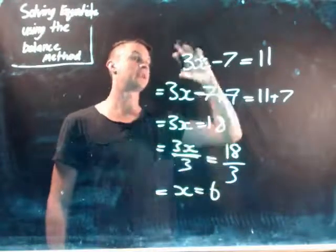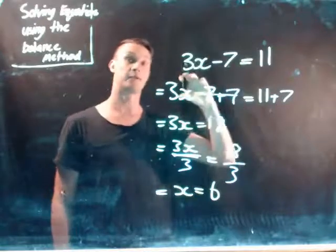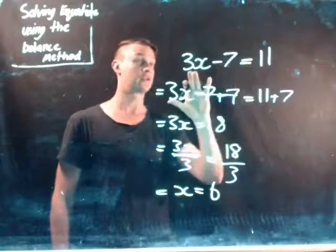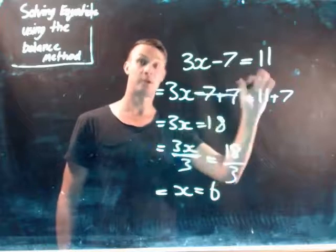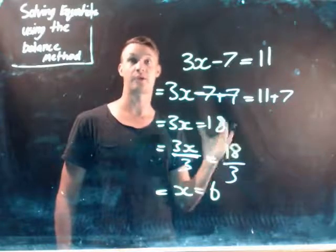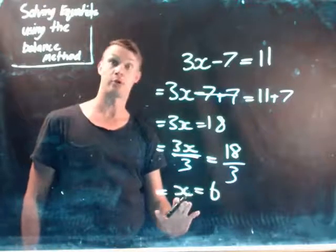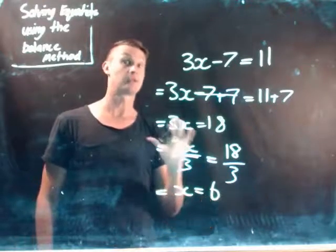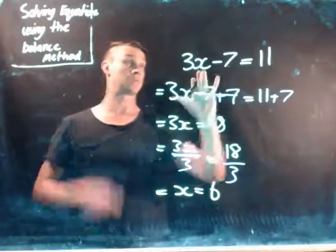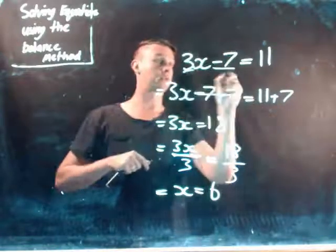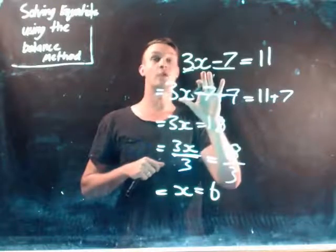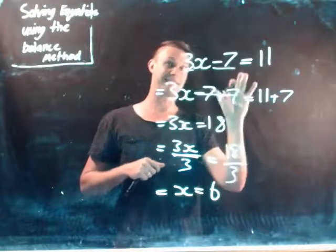So what you're basically doing is you're breaking down the left-hand side and the right-hand side. You're trying to do the inverse operation of each step of the equation. And what you should have at the end is just your pronumeral and the answer. That's the goal for most of the time. You want to get rid of the 3 and the minus 7, so all you're left with is the x and the equals.